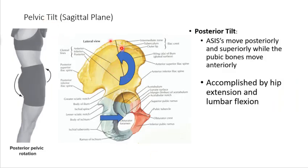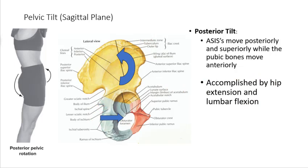Posterior pelvic tilt is just the reverse. You're going to have the PSIS — the posterior superior iliac spine — moving down, and you're going to have lumbar flexion and hip extension, so glute max and abdominals are going to help achieve this.